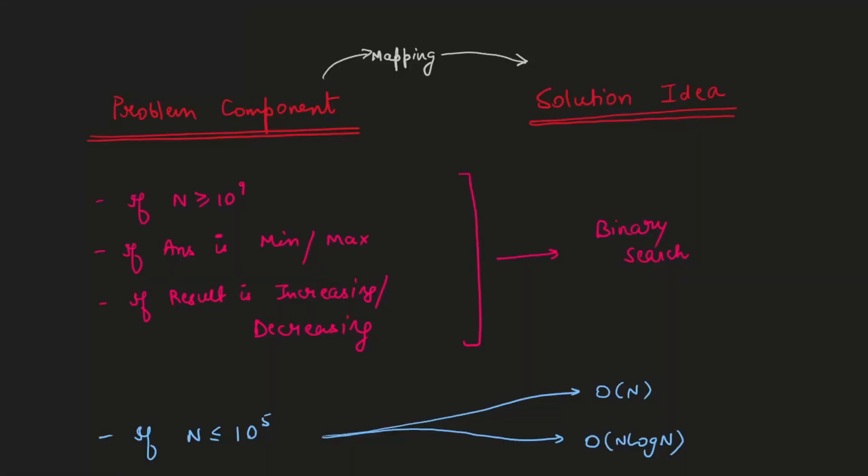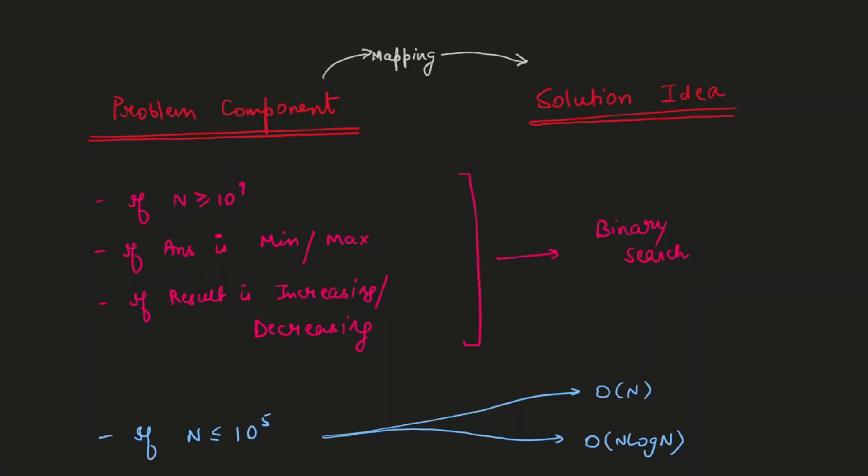When you encounter a problem, ask: what has worked before? That gut feeling is intuition. You can bifurcate a problem into multiple components and map each component to a solution idea. For example, if the loop condition runs more than 1e9, or maybe 1e18 or 1e15, it's almost certainly some kind of binary search. If the answer is just increasing or decreasing, or you have to find a maximum or minimum, it's binary search.